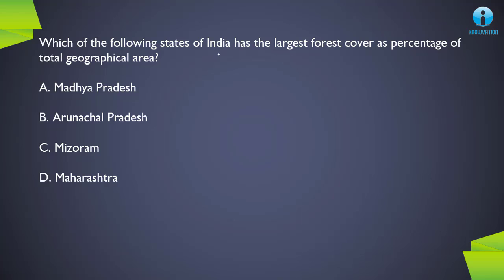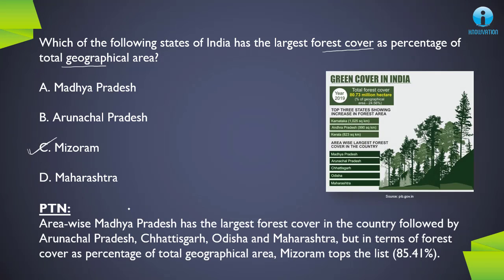Next question: which state of India has the largest forest cover as a percentage of its total geographical area? The correct answer is C, Mizoram. Note the distinction carefully: if asked which state has the largest forest cover area, the answer would be Madhya Pradesh. But as a percentage of total area, the answer is Mizoram. In terms of forest cover area, the order is Madhya Pradesh, Chhattisgarh, Odisha, and Maharashtra. The top three states showing an increase in forest area are Karnataka, Andhra Pradesh, and Kerala. This data is from 2019.